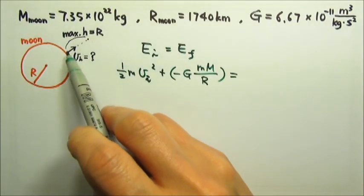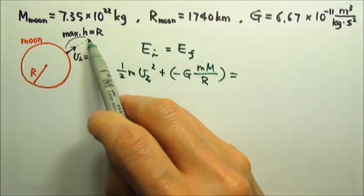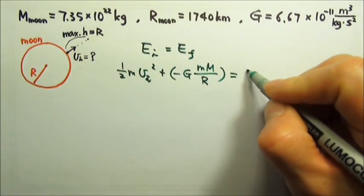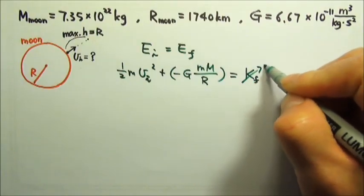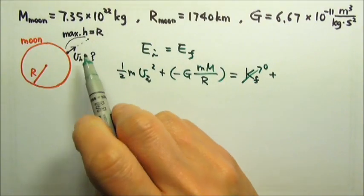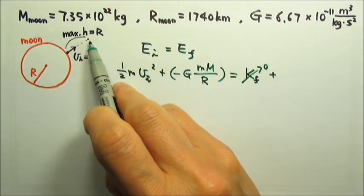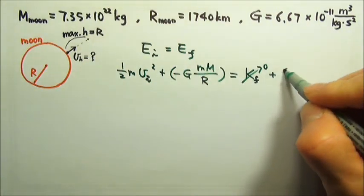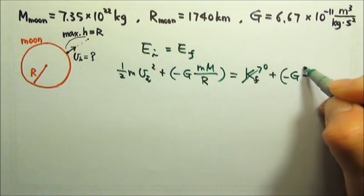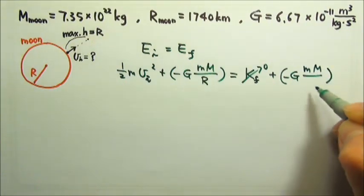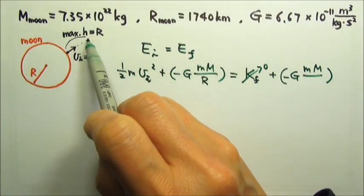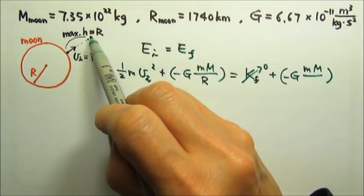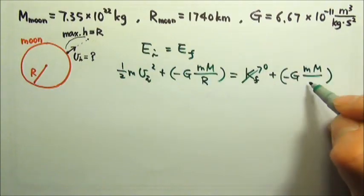The final is when the object reaches the maximum height. Since it's the maximum height, it is the turning point. That means the final kinetic energy is zero. Over there, it does have gravitational potential energy. Again, we have to use that same equation. That's negative G m M over r. And over there, the r, the distance to the center of the moon, will be R plus R. It's twice the radius of the moon.